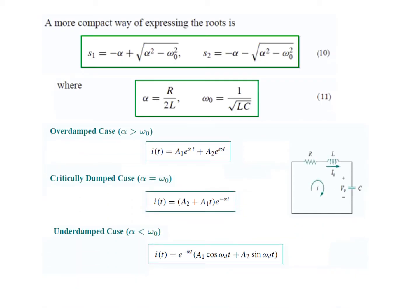In the previous video we also found that there could be three current equations for the circuit. If alpha is greater than omega, which is an over-damped case, then we use the first formula. If alpha is equal to omega, which is a critically damped case, then we use the second formula. And if alpha is less than omega 0, which is an under-damped case, we get oscillation, so we use the formula with cosine and sine terms.